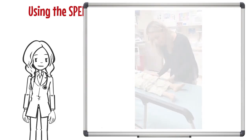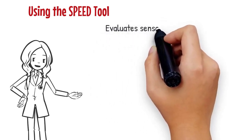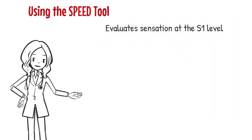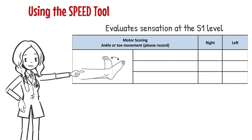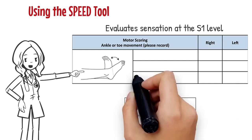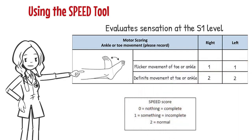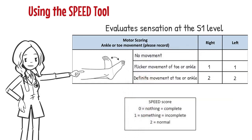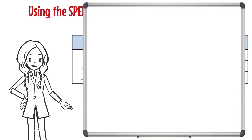The second component of SPEED sensory assessment evaluates sensation at the S1 level. This assessment is performed by lightly rubbing the lateral side of both ankles. If the patient is able to feel touch, a normal score of 2 is given. Altered or diminished sensation gets a score of 1, while the inability to feel touch scores a 0. Let's watch a short video for an example of this sensory exam component of SPEED.